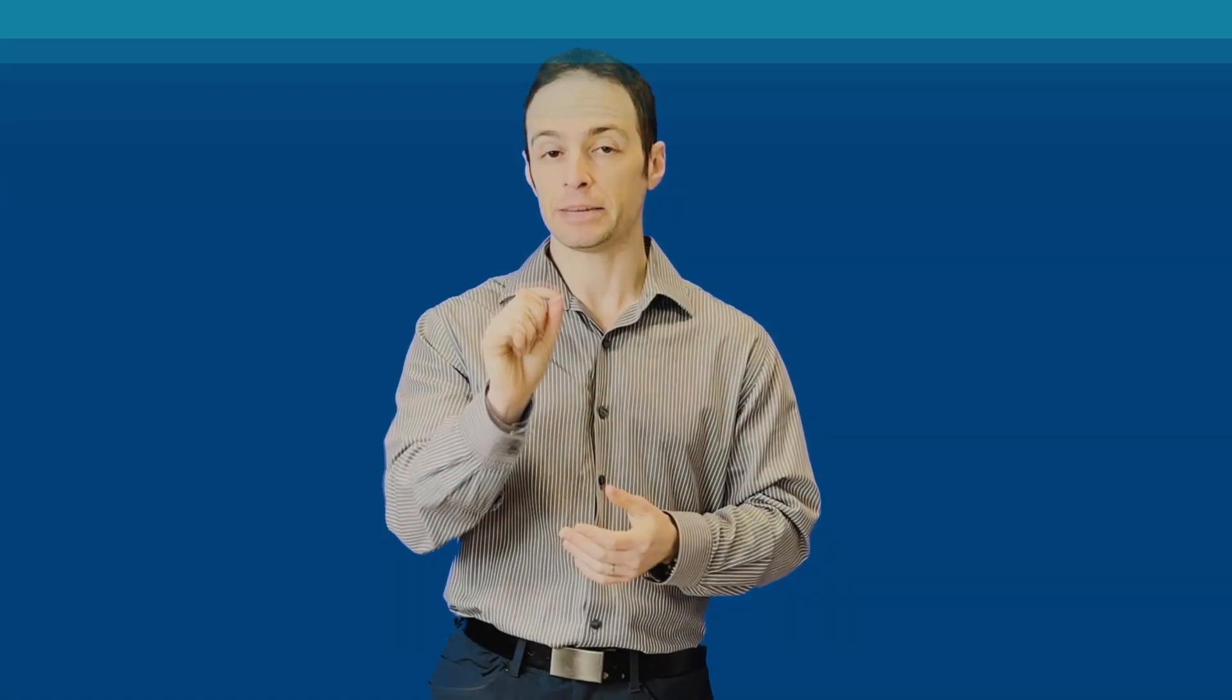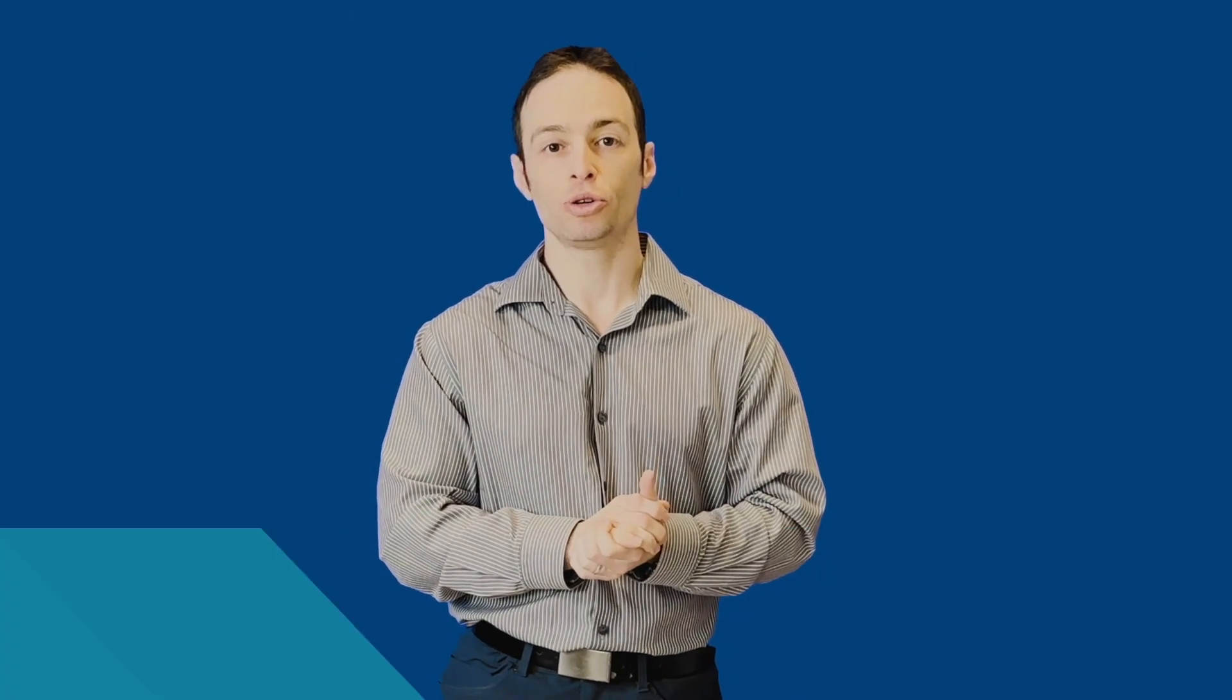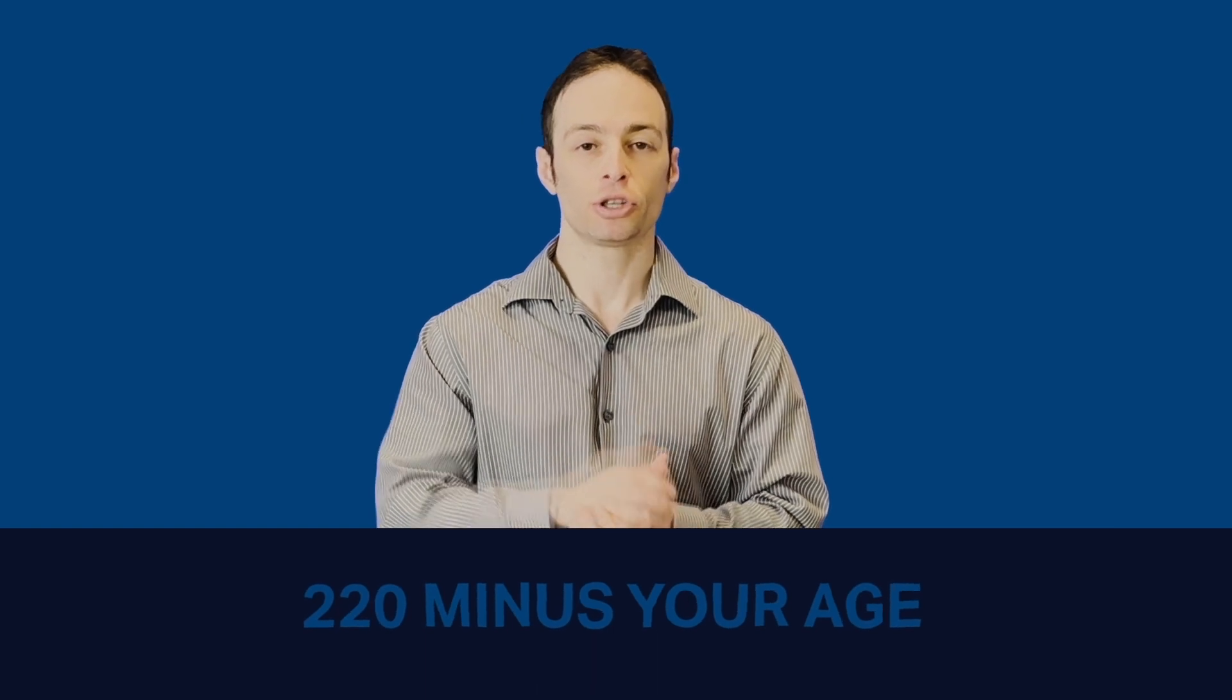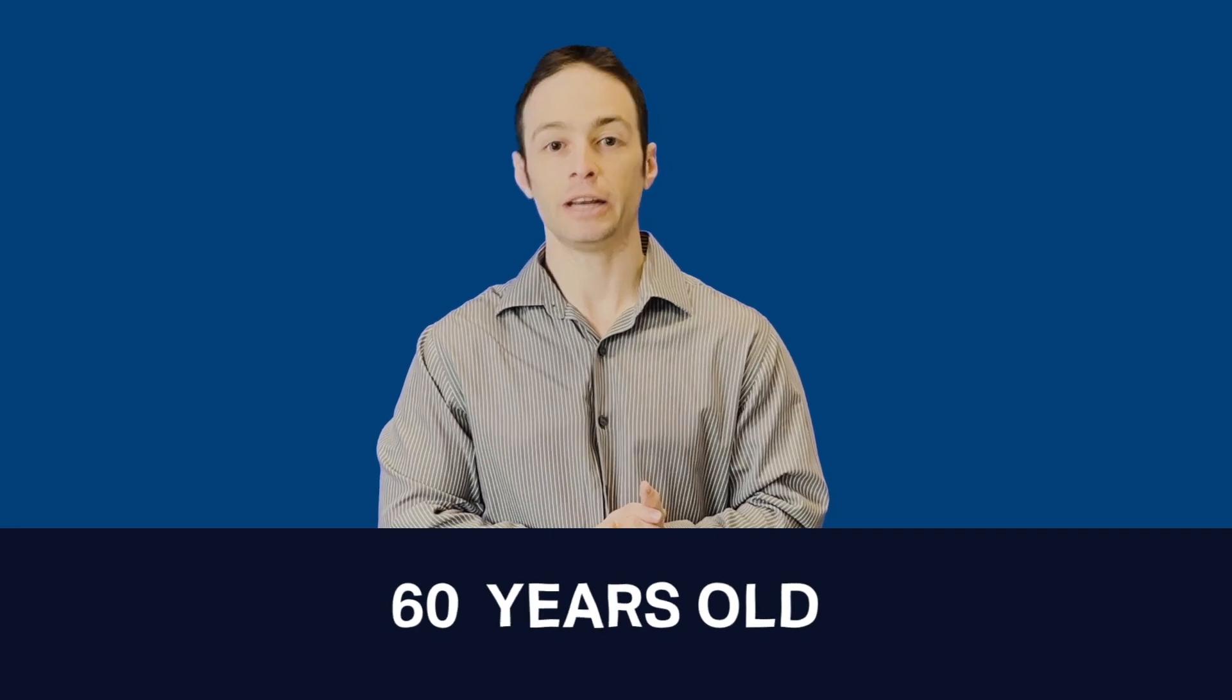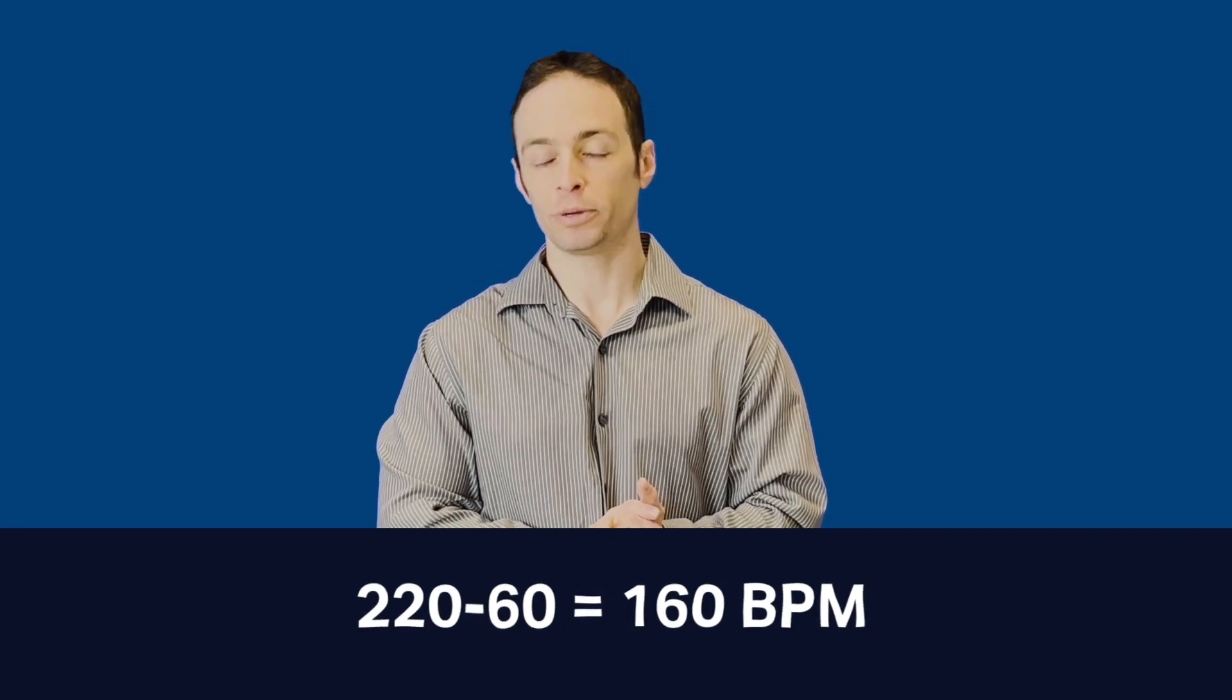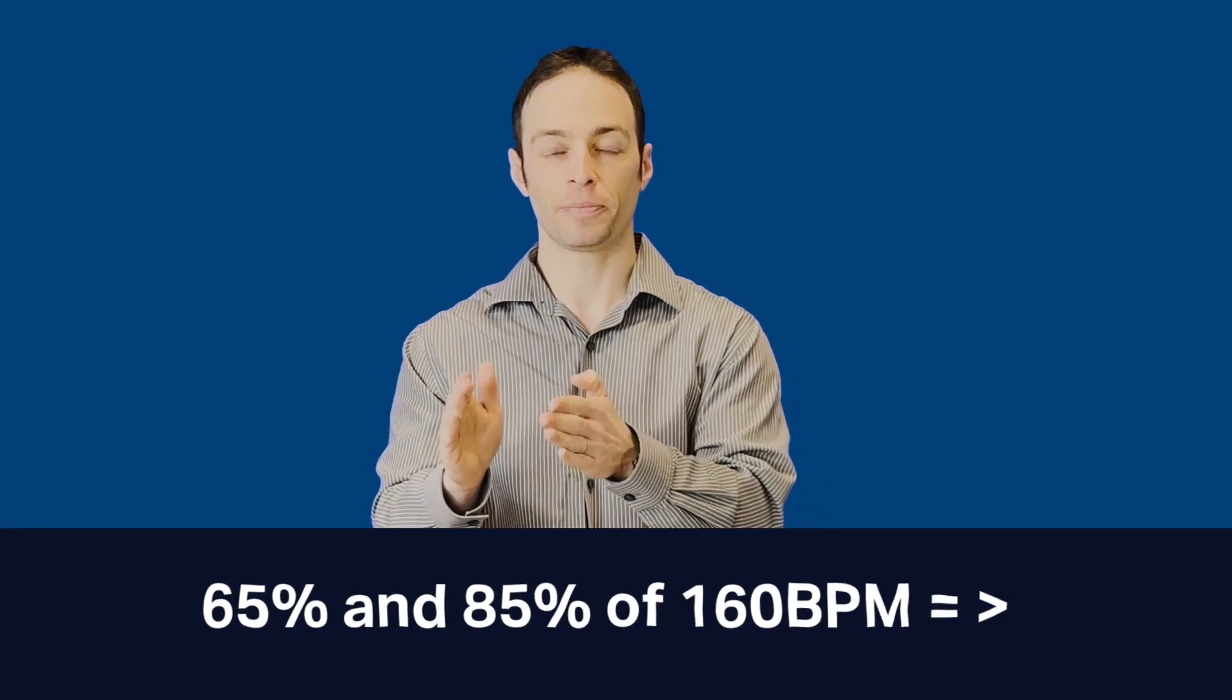And the intensity, this is the most important part. The intensity refers to the pulse. The pulse needs to be between 65 and 85% of your maximal heart rate. And what is your maximal heart rate? Well, your maximal heart rate is 220 minus your age. So if you, the person watching this is hypothetically 60 years old, your maximal heart rate is 160. And you would need to work between 65% and 85% of 160.